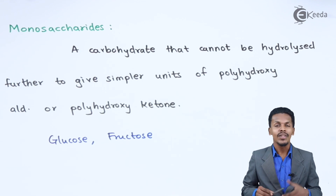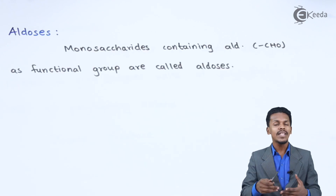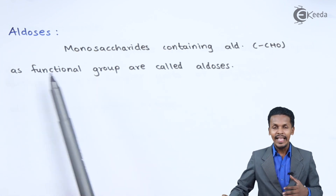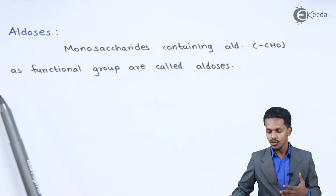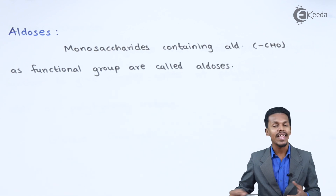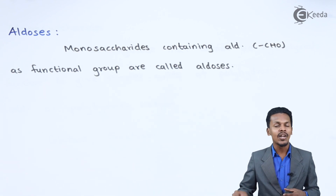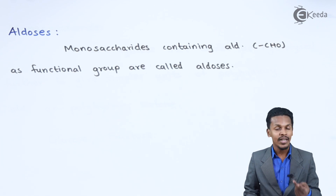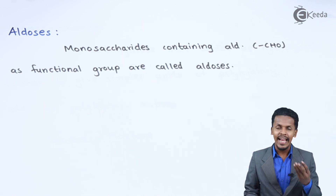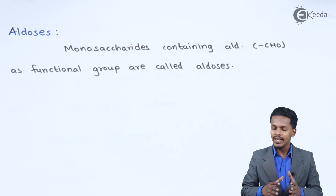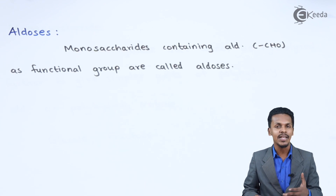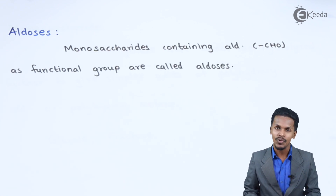Now let me talk about the classification of Monosaccharides. Monosaccharides are divided into two types: Aldoses and Ketoses. Aldoses are monosaccharides containing an aldehyde group (CHO) as a functional group. Aldoses are further divided into Aldotrioses, Aldotetroses, Aldopentoses, and Aldohexoses.